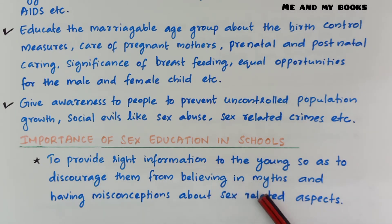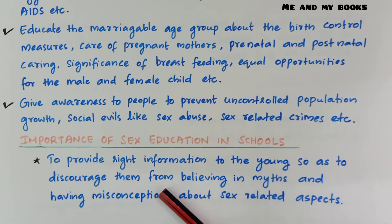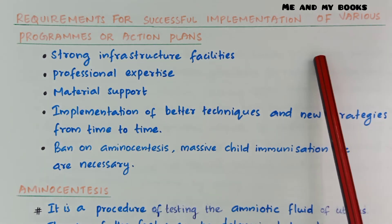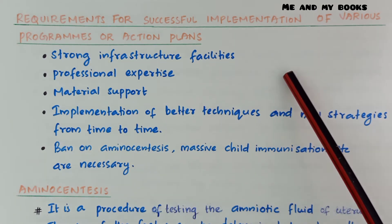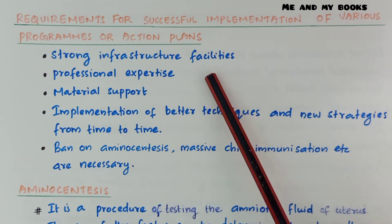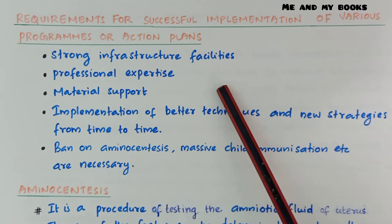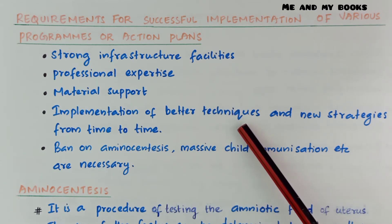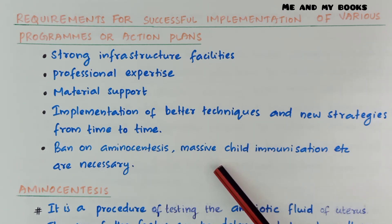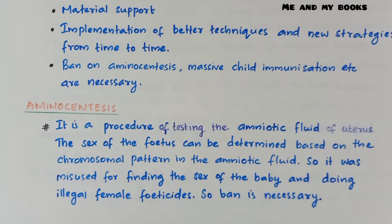Requirements for successful implementation of various programs or action plans include: strong infrastructure facilities such as buildings and hospitals; professional expertise, meaning skilled or trained workers; material support; implementation of better techniques and new strategies from time to time; ban on amniocentesis; and massive child immunization.